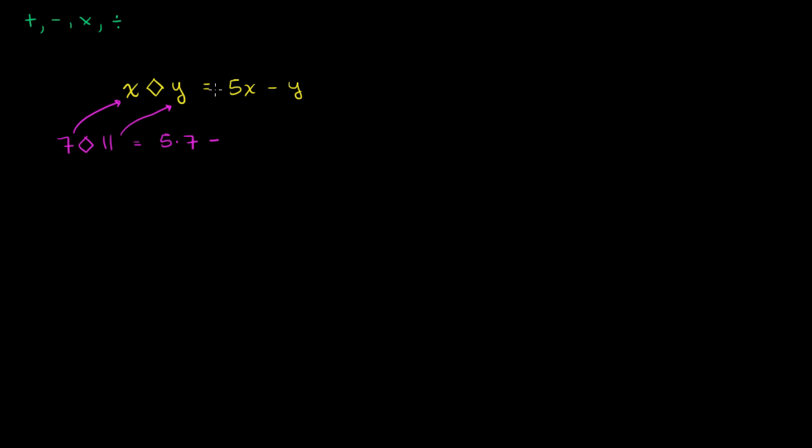One way to think about it is, in our definition, every place you saw an x, you replace with a 7. Every place you saw a y, you replace with 11. Then we just evaluate that. So 5 times 7 is 35. This equals 35 minus 11, which is equal to 24.